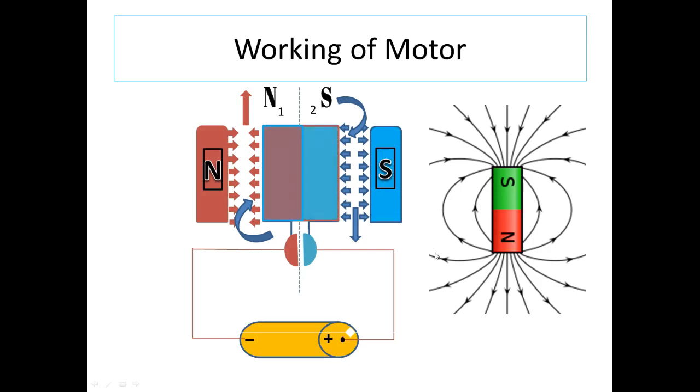Once they rotated, the commutator is now changed. Now, section 2 commutator is connected with positive and section 1 commutator is connected with negative. Now, due to this, the positive supply is now entering into section 2.